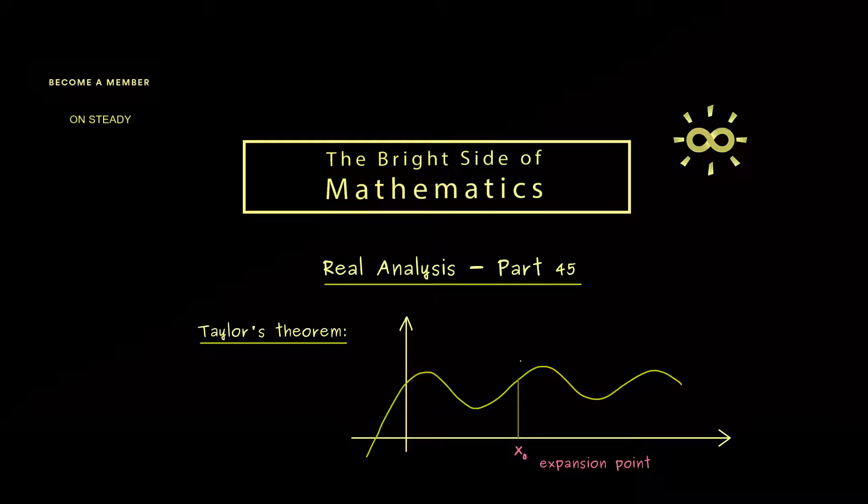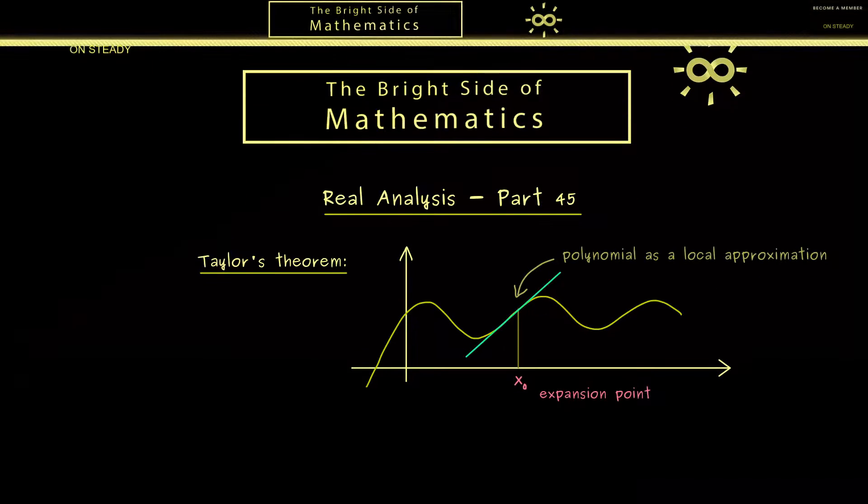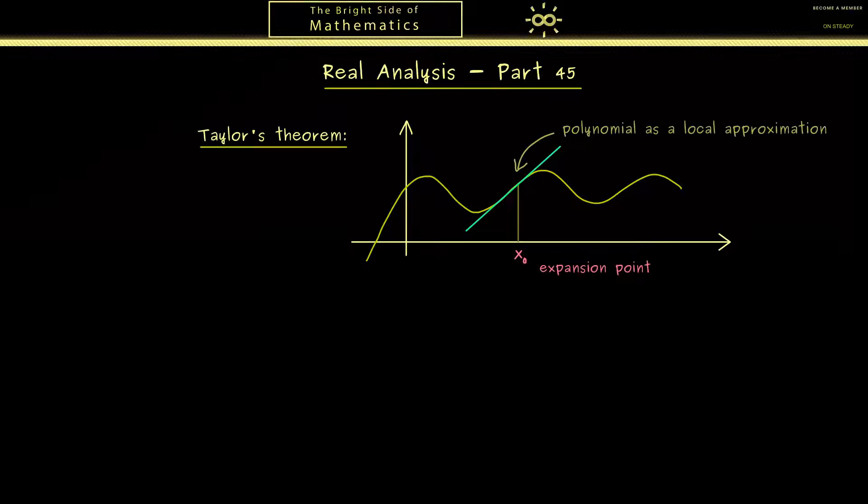Now I already told you we want an approximation around this point and this should be given by a polynomial. In fact you already know the simplest one given by the tangent. Please recall this is the linear approximation we introduced in the definition of the derivative. In other words here we have a polynomial with degree 1. Indeed now Taylor's theorem generalizes this fact to polynomials with higher degrees.